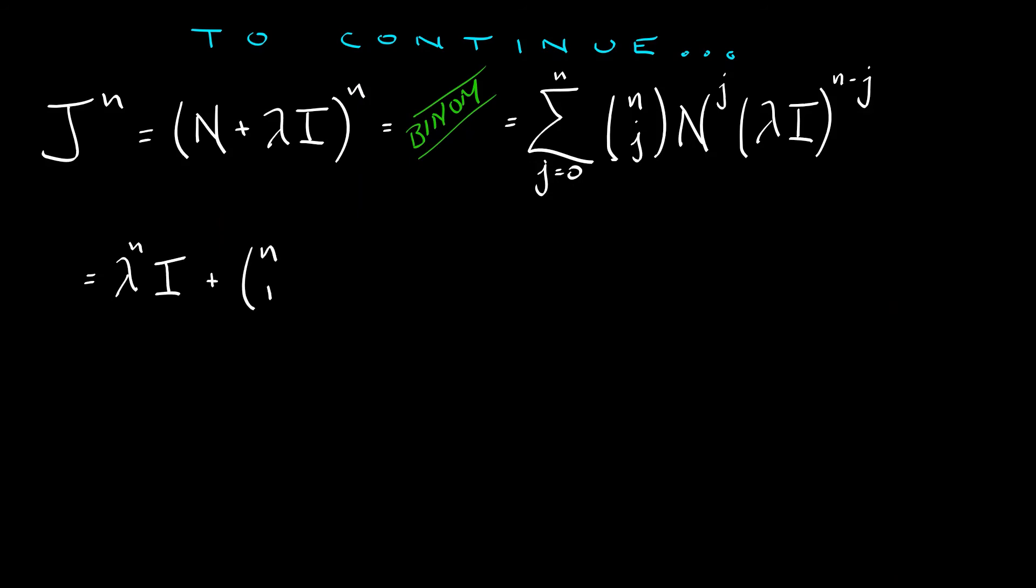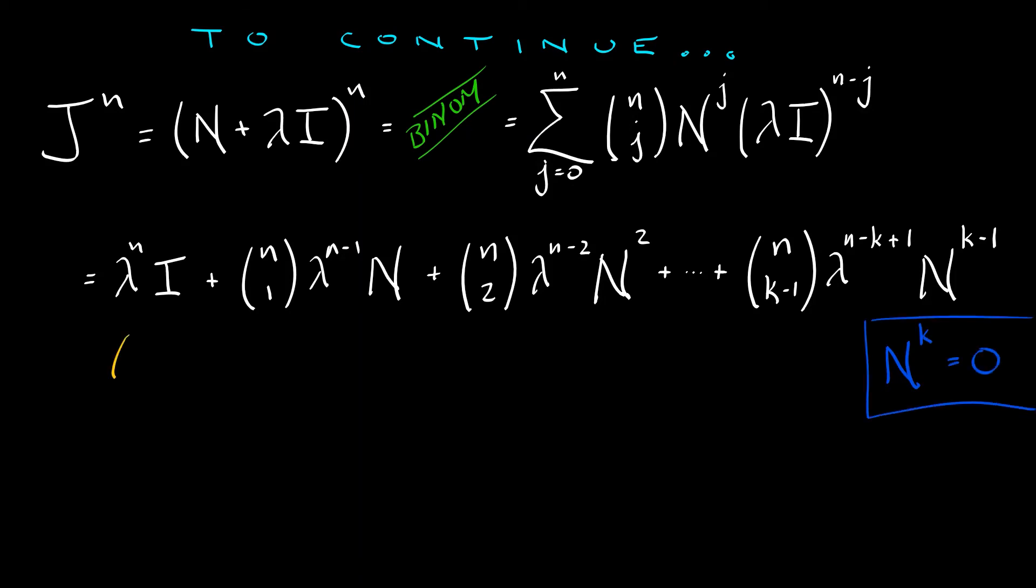What comes next? The next term is going to be n choose one times lambda to the n minus one times N. Next term, n choose two, lambda to the n minus two, N squared. And this keeps going all the way up through n choose k minus one, lambda to the n minus k minus one, capital N to the k minus one. The first entry in this series is our diagonal. It's just lambda to the nth times the identity matrix. The second entry is giving us n choose one times lambda to the n minus one times this matrix N that just has things on the super diagonal. And then the next term with capital N squared, that's the super super diagonal. And we keep going. This is where all of these terms come from.